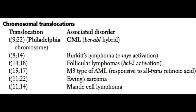BCL-2 is the protein that inhibits apoptosis, so too much of it again causes uncontrolled cell proliferation. Translocation 15 to 17 is responsible for the M3 type of AML — the kind that is responsive to all-trans retinoic acid.